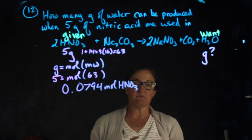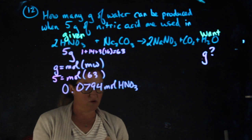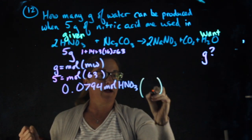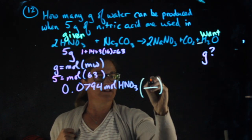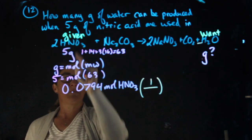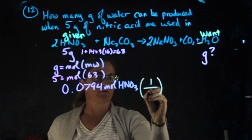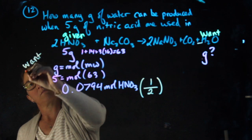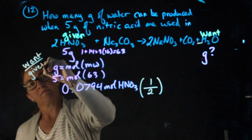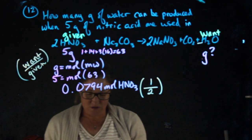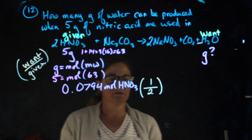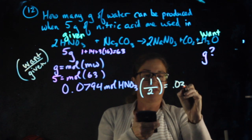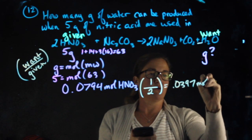My next step is a mole ratio. I want to do the mole ratio so I can find the moles of water. I'm going to multiply by 1 over given. I want water, it has a coefficient of 1. My given is HNO3, which has a coefficient of 2. So this number times 1 divided by 2 gives me 0.0397 moles of water.